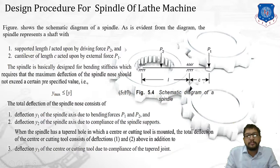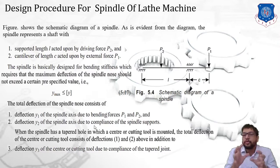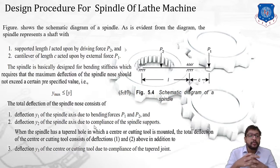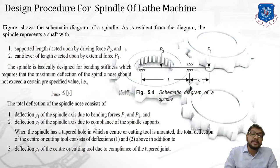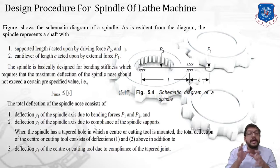Remember: P2 is the driving force and P1 is the force at the free end of the cantilever. The spindle is basically designed for two conditions. The first is bending stiffness, which requires that the maximum deflection of the spindle nose should not exceed a certain predefined value — that is, y_max should be less than or equal to y (permissible), where the maximum displacement must always be less than the predefined permissible value.